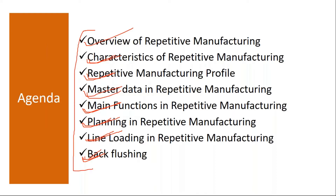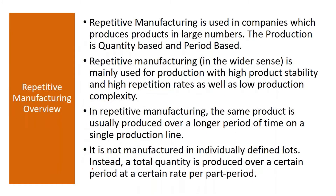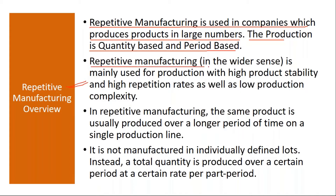Repetitive manufacturing is used in companies which produce products in large numbers. The production is quantity-based and period-based. Some industries produce the same product over a period of time — for example, cement manufacturing industry. They manufacture the same cement continuously with no product changeovers. In those kinds of industries, they go for repetitive manufacturing.